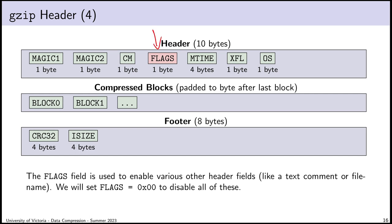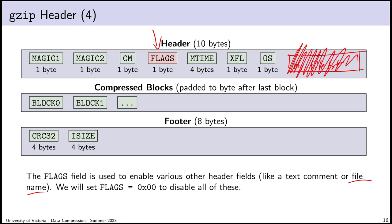There's a flags byte containing bit flags that turn on optional features. We do not want to turn on optional features — for example, there's an option to insert the filename into the header, and there's even an option to add an arbitrary uncompressed text comment. We don't care about any of that, so we're going to set flags to 0 and disable all optional features. We just want to get to that compressed bitstream.